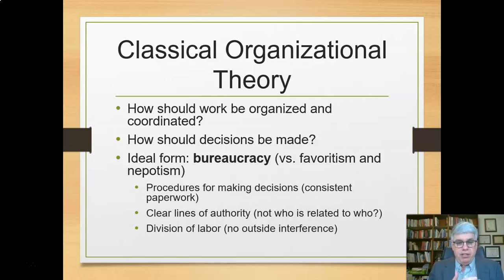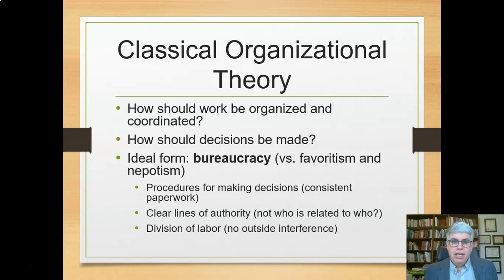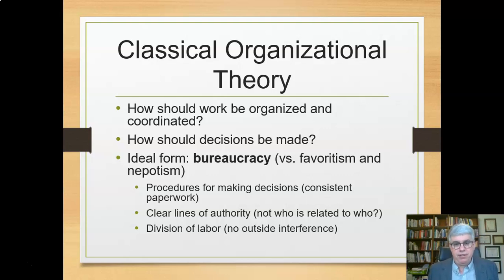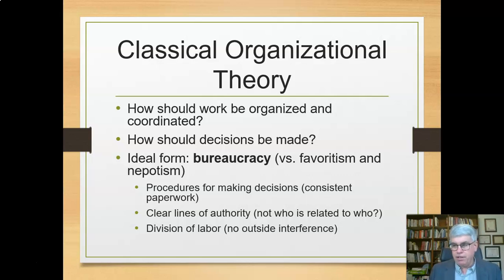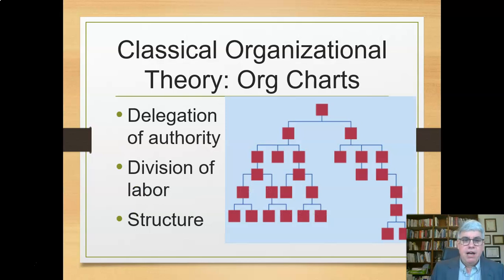By developing these procedures for making decisions and having everybody do consistent paperwork, decisions were no longer based on who you're related to. There were clear lines of authority — in this part of the organization this person was in charge, over there it was someone else, and they couldn't influence each other based on who they know. There was also a division of labor: this group is in charge of accomplishing this, that group is in charge of doing that. Classical organizational theory can best be understood through org charts.